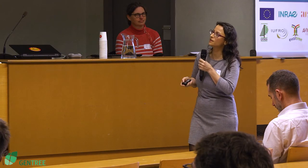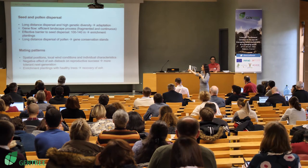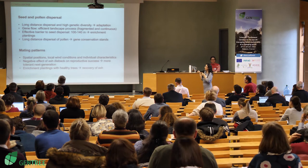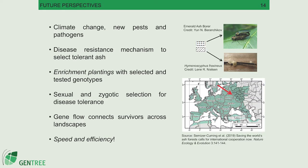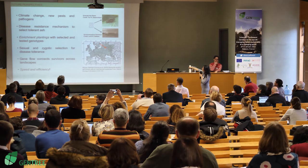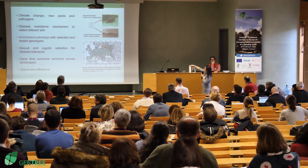Long-distance dispersal, however, could be a problem for gene conservation stands, since pollen can travel kilometers even if rarely. Mating patterns are affected by several factors. The most important finding is the negative effect of ash dieback on reproductive success, which may mean we will have a more tolerant next generation. But there is a problem with climate change and the introduction of new pests and pathogens — for example, the emerald ash borer, which is currently meeting the ash dieback fungus in Russia and is moving westward toward Europe.